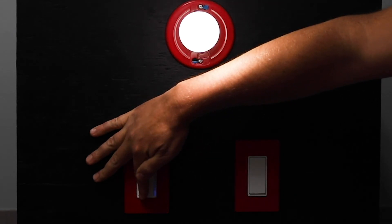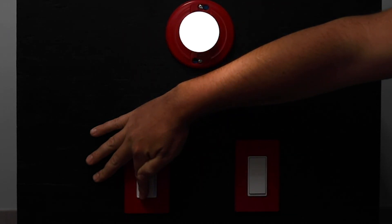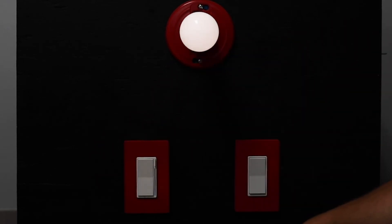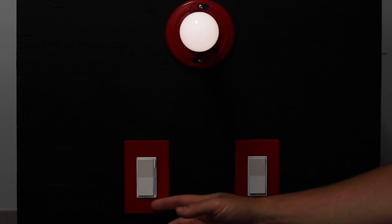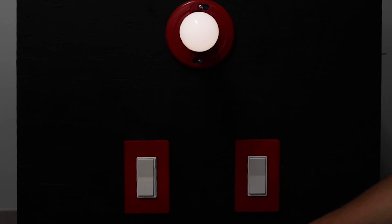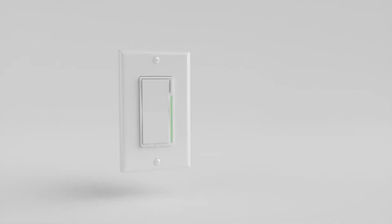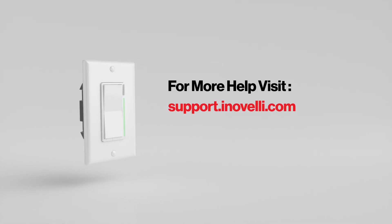So if we dim the bulb down, it stops before it turns off. So if you have LED bulbs that turn off or CFL bulbs that turn off before they dim down all the way to zero, you can just reprogram that right here on the switch. Any other questions you guys have or videos you want to see, reach out to contact at Inovelli.com or leave a comment below.